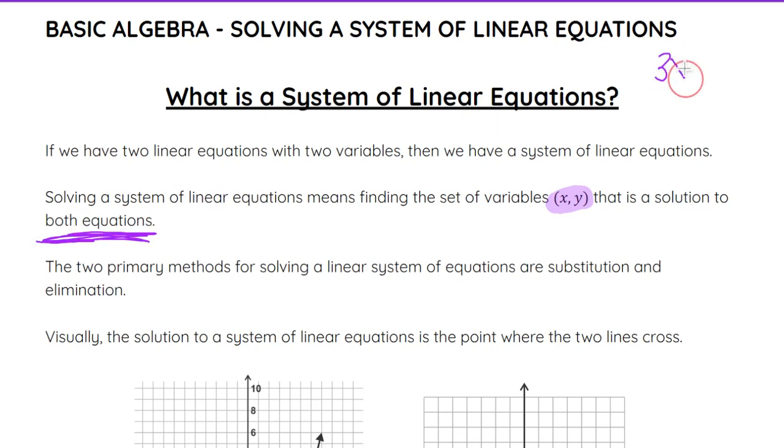So for example, if I had 3x plus 2y equals 4, and 4x plus 7y equals 9, the two equations here form a system of linear equations. The ordered pair, whatever it is (x, y), that is a solution to both of these equations is going to be the solution to the entire system.